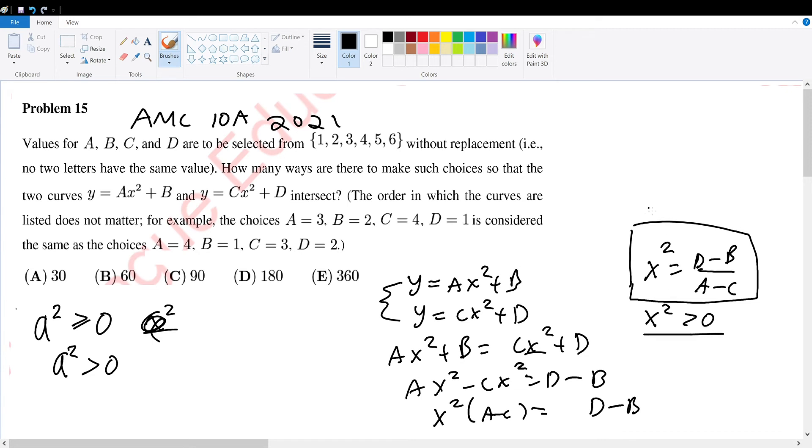Now, when will x squared be greater than zero? Well, that is only the case when the two signs in the denominator and numerator are the same. So positive, positive, or negative, negative. This is case one, and this is case two. So we can evaluate each case, sum them up, and we will be done.